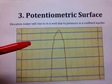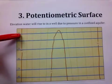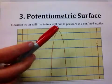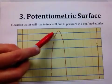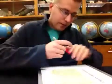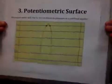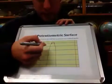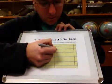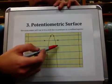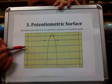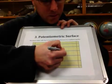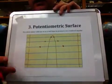Wherever the potentiometric surface line of a given elevation hits the land contour line of the same elevation, we make a dot. The land elevation line for 700 intersects the potentiometric surface line for 700 at two locations — so we make two dots. We then go to the next potentiometric surface line, 720, which is one land contour line above 700, and make dots there. We continue the same process for 740, 760, 780, and 800.